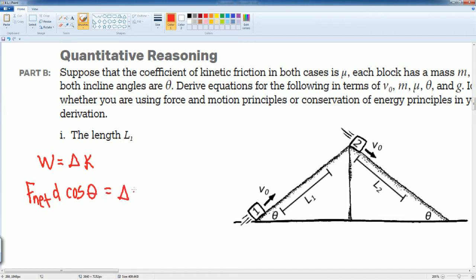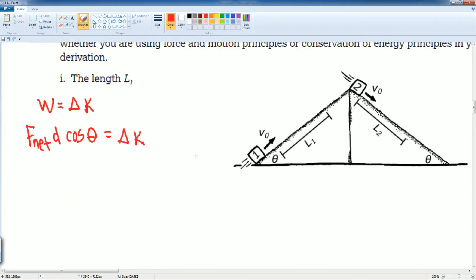So I'm gonna have here work is gonna be equal to the change in kinetic energy. The work version that I'm gonna use is F_net times distance cosine theta. The reason why is because there's an angle here. That's gonna be equal to delta K. Next part, I have to figure out what my F_net is, so I have to do Newton's second law for this situation. I saw that the F_net in this situation is gonna be made up of certain forces.